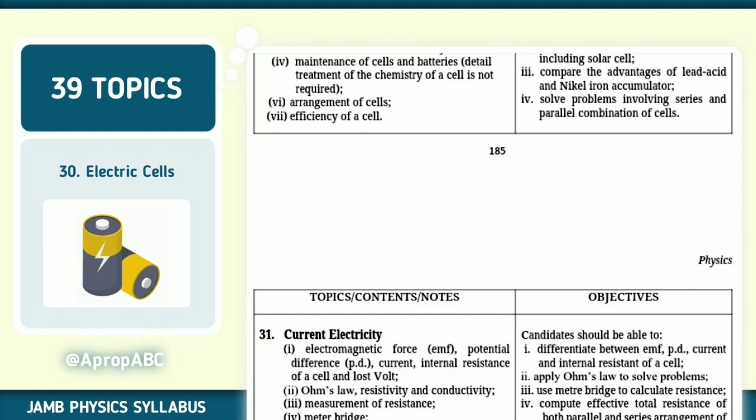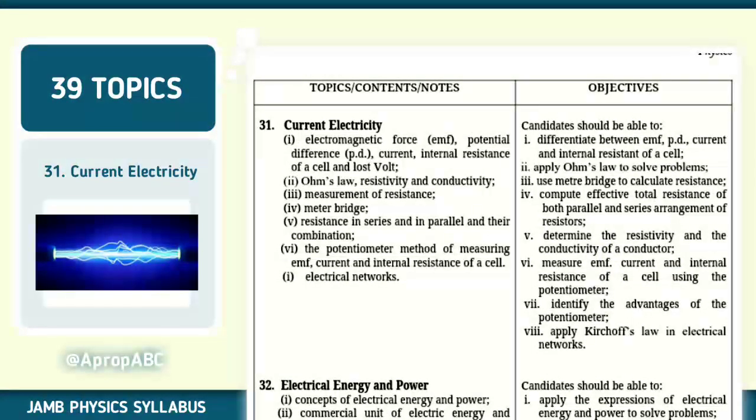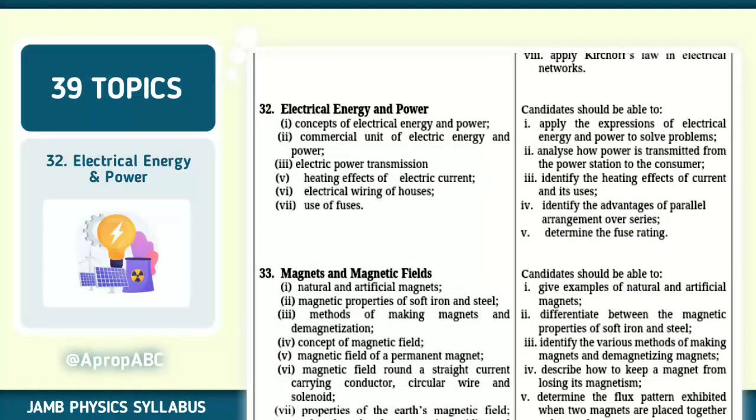Number 31 of 39, we have current electricity. Electromotive force (EMF), potential difference (PD), voltage, internal resistance of cell and lost voltage. Ohm's law, resistivity and conductivity, measurements of resistance, electrical network. Also make sure that you can apply Kirchhoff's law in electric network.